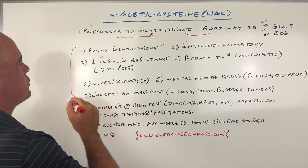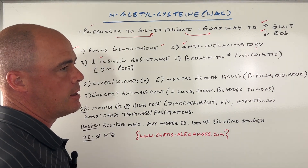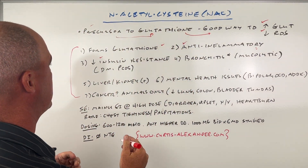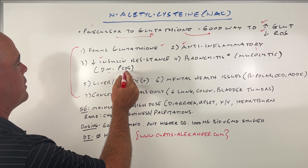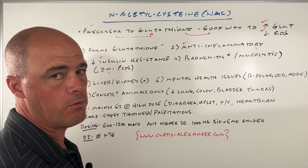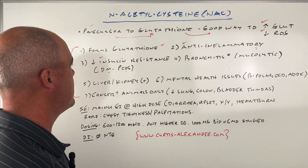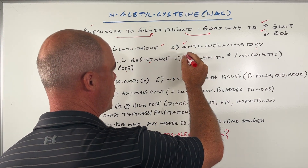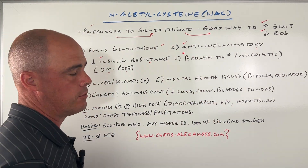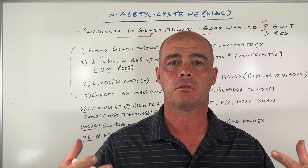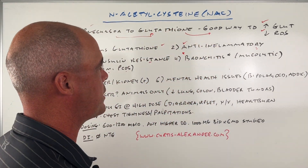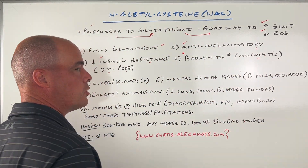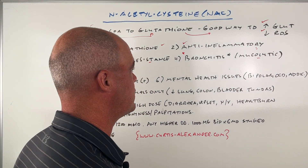We also know there appears to be the ability for NAC to help with things like diabetes, even PCOS — polycystic ovarian syndrome in women — because it lowers insulin resistance. One thing we've known for quite a while: if somebody has chronic bronchitis, it can help because it's a mucolytic — it helps break up that mucus in the lungs.